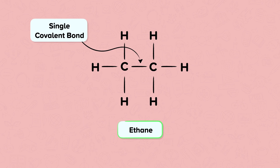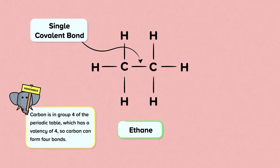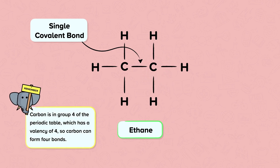Carbon is in group four of the periodic table, which has a valency of four, so carbon can form four bonds.